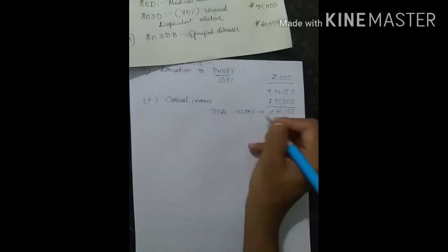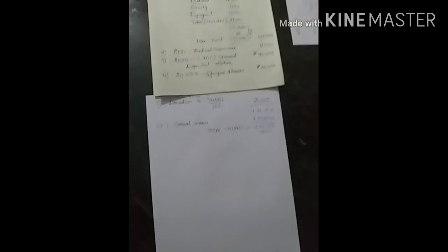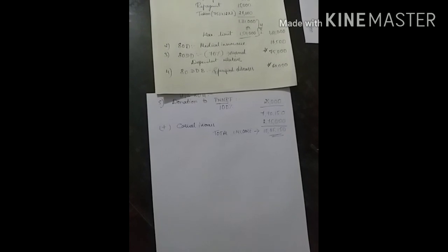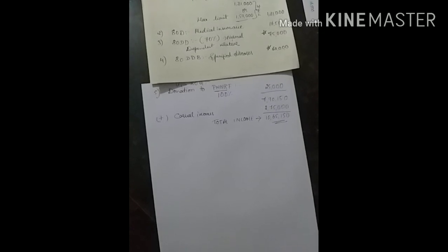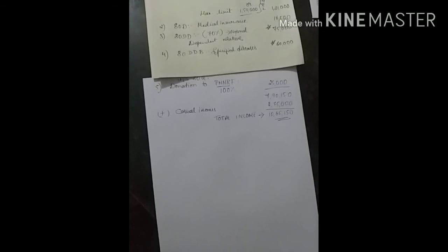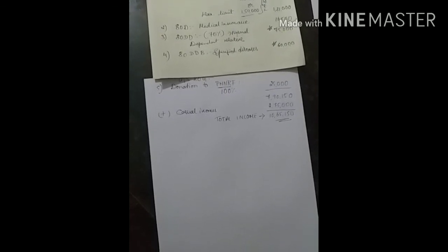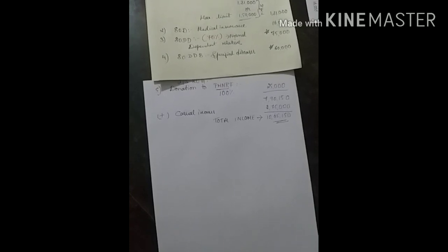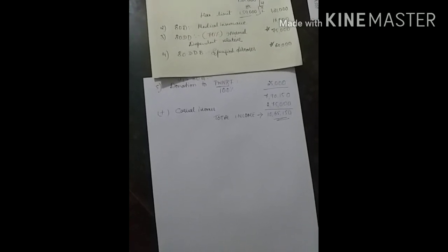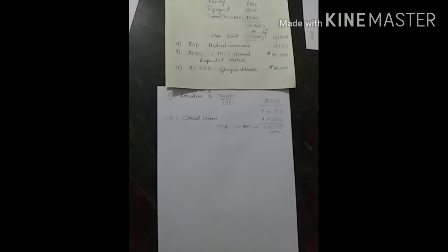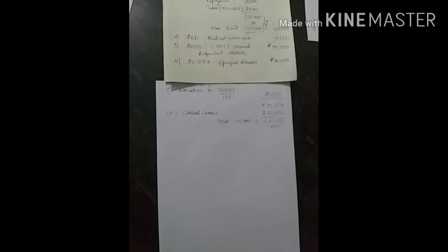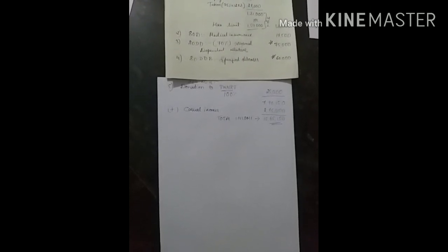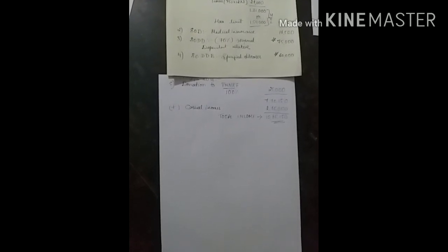So the problem ends up here. Tax liability is going to be calculated by the tax liability. It is a problem with all items that you can solve. Definitely, this is a question of 14 marks from the exam point of view. Here ends up the 4th chapter, that is deductions from GTI, gross total income. Okay, thank you.